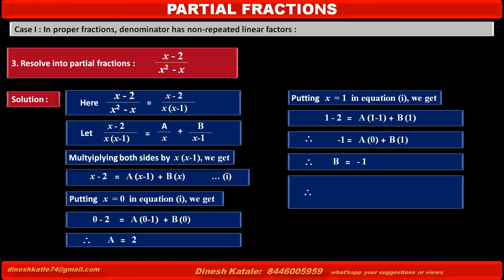Therefore, the given fraction x minus 2 upon x(x minus 1) equals 2 upon x minus 1 upon x minus 1, since the value of a is 2 and the value of b is minus 1. Take a pause here and try to solve this problem again on your own.